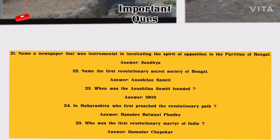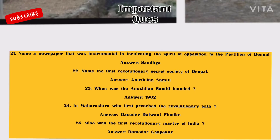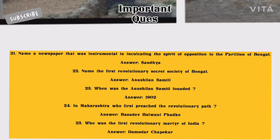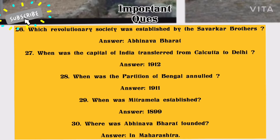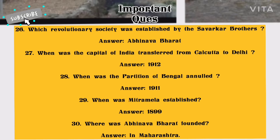Number 22: Name the first revolutionary secret society of Bengal. Answer: Anushilan Samiti. Number 23: When was the Anushilan Samiti founded? Answer: 1902. Number 24: In Maharashtra, who first preached the revolutionary path? Answer: Vasudev Balwant. Number 25: Who was the first revolutionary martyr of India? Answer: Damodar Chapekar.